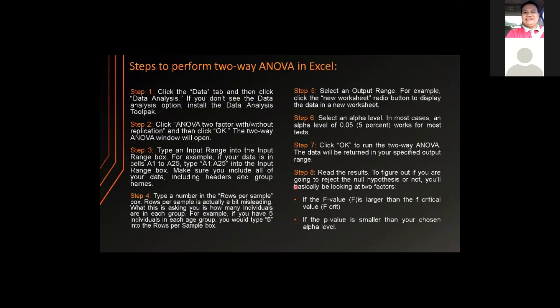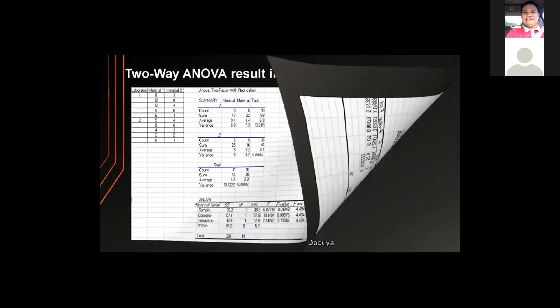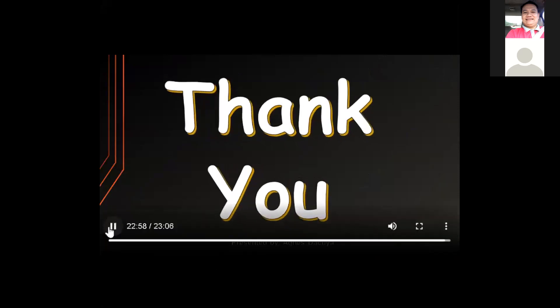To read the results and determine whether to reject the null hypothesis, look at two factors: if the F value is larger than the F-critical value, or if the p-value is smaller than your chosen alpha level. That would be all for my report. Thank you and God bless.